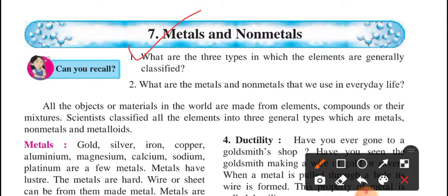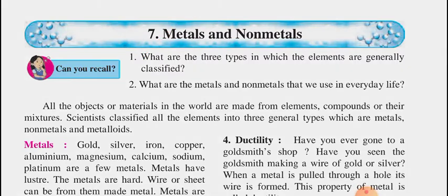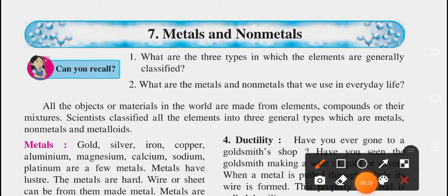You must have heard about this question. The very first question is: what are the three types in which the elements are generally classified? And the three types are metals, non-metals, and metalloids.